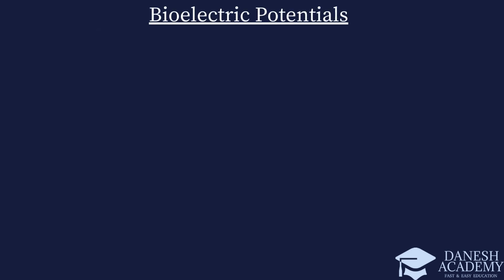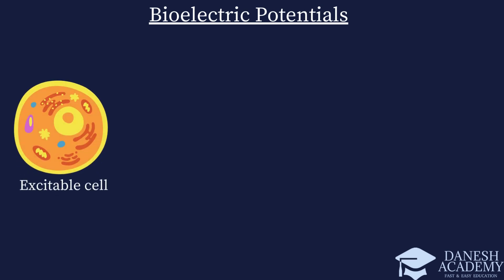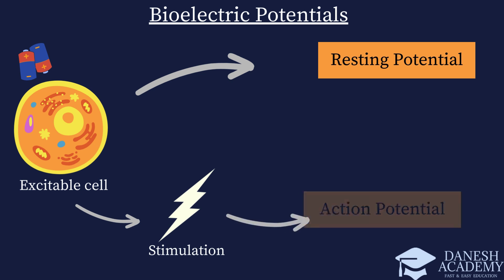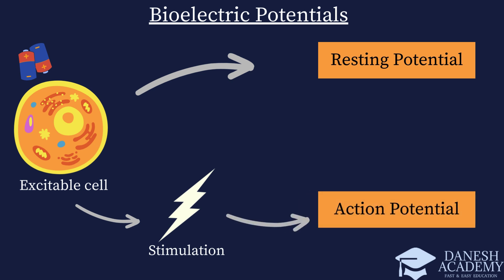Bioelectric potentials are produced as a result of electrochemical activity of a certain class of cells, known as excitable cells, that are components of nervous, muscular, or glandular tissue, acting like tiny batteries. These excitable cells normally have a resting charge, referred to as resting potential, but when stimulated, they fire off an action potential — an electrical spark. This electrochemical activity is what creates the bioelectric potentials which scientists study.